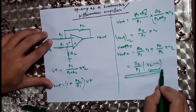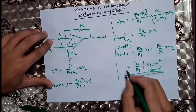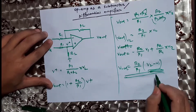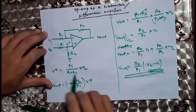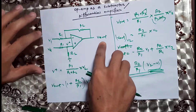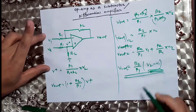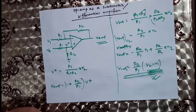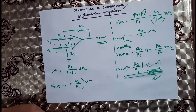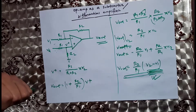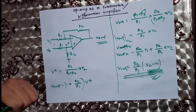That means the output is the difference between the two inputs — it is subtractive. So the output is R2/R1 times (V2 minus V1), which confirms this circuit acts as a subtractor. In the next video, we will solve some problems on the differential amplifier. Thank you.